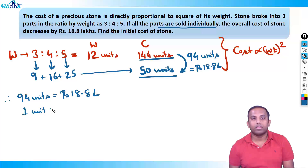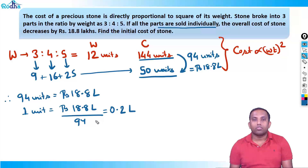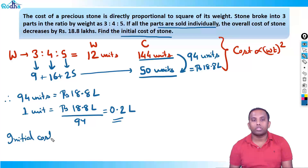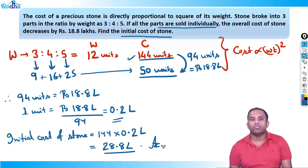So 94 units = ₹18.8 lakhs, therefore one unit = 18.8/94 = 0.2 lakhs. The initial cost of the stone is 144 units. So 144 × 0.2 lakhs = 28.8 lakhs. This is the answer for this question.